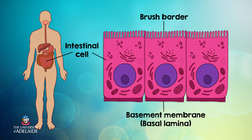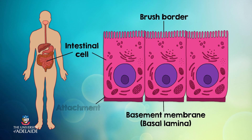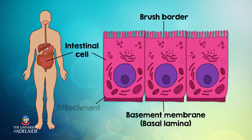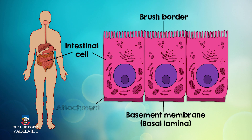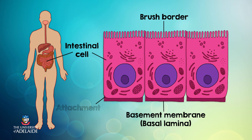Epithelial cells display attachment. Attachment means that the basal surface of the cells are attached to a special layer called the basal lamina or basement membrane. The basal lamina or basement membrane supports the epithelium and anchors it firmly to the underlying connective tissue.